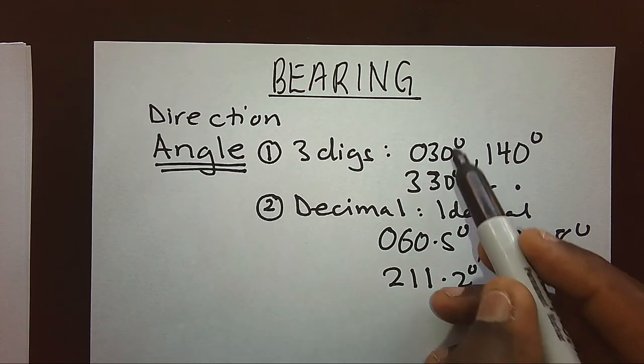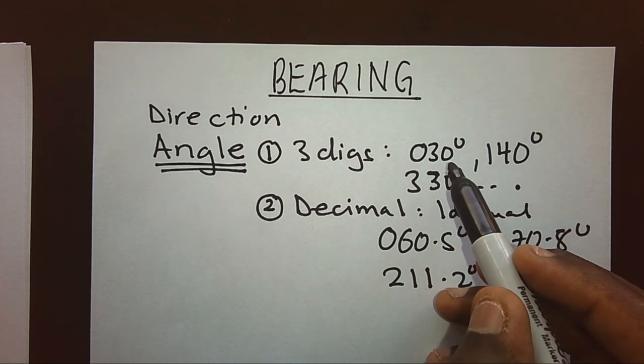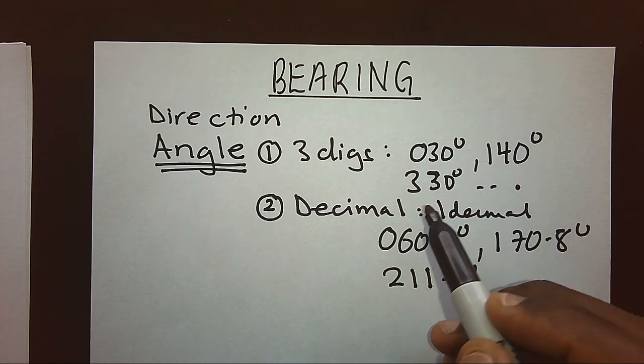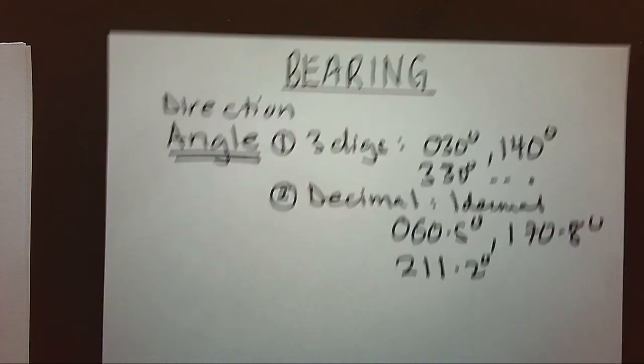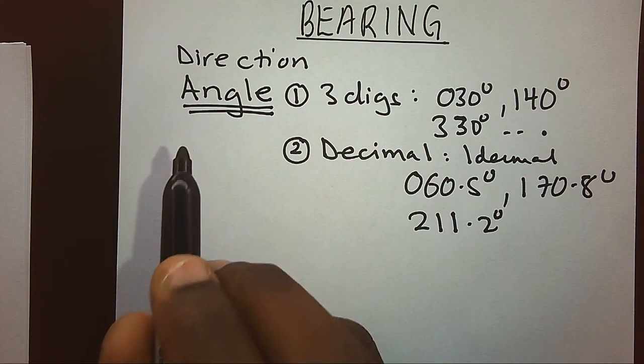Now, this angle must be in three digits. If this angle has decimals, then we have to keep one decimal place. How is this angle measured so that we can note bearing?